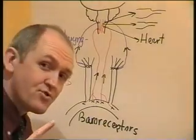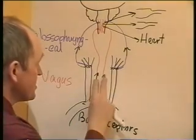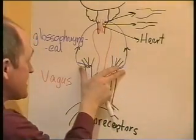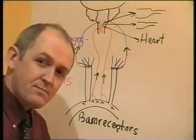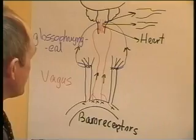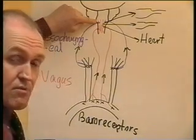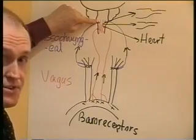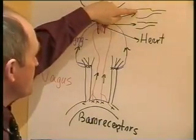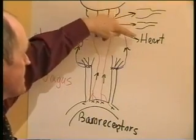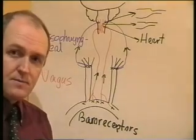However, if the blood pressure drops, then there's going to be less impulses going up the vagus nerve and less impulses going up the glossopharyngeal nerve from the baroreceptors. And if there's less impulses from the baroreceptors going into the brainstem, the brainstem will automatically increase its sympathetic outflow to vasoconstrict arteries and veins and increase cardiac output, so restoring blood pressure.